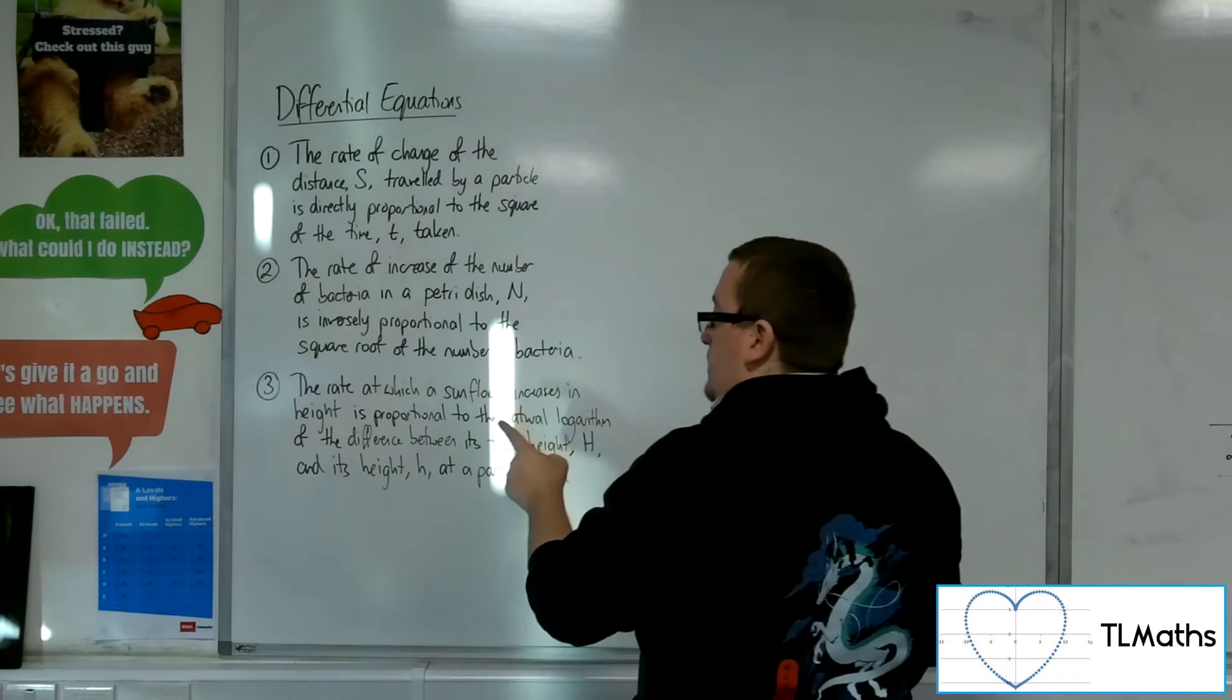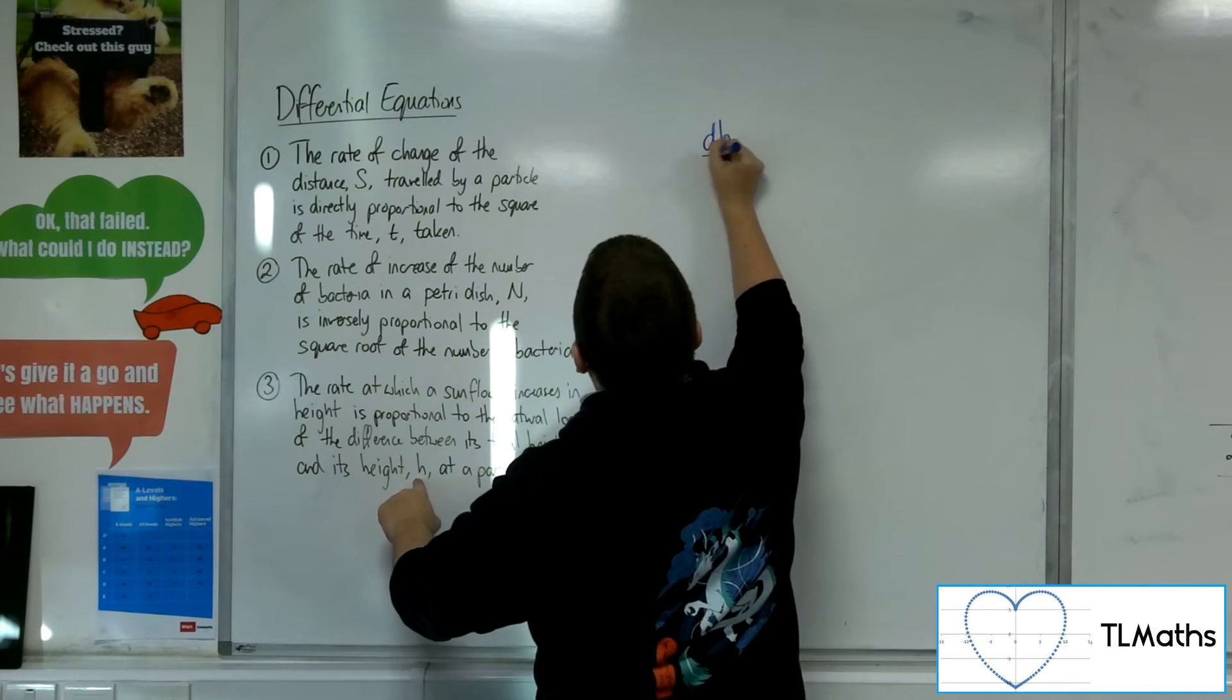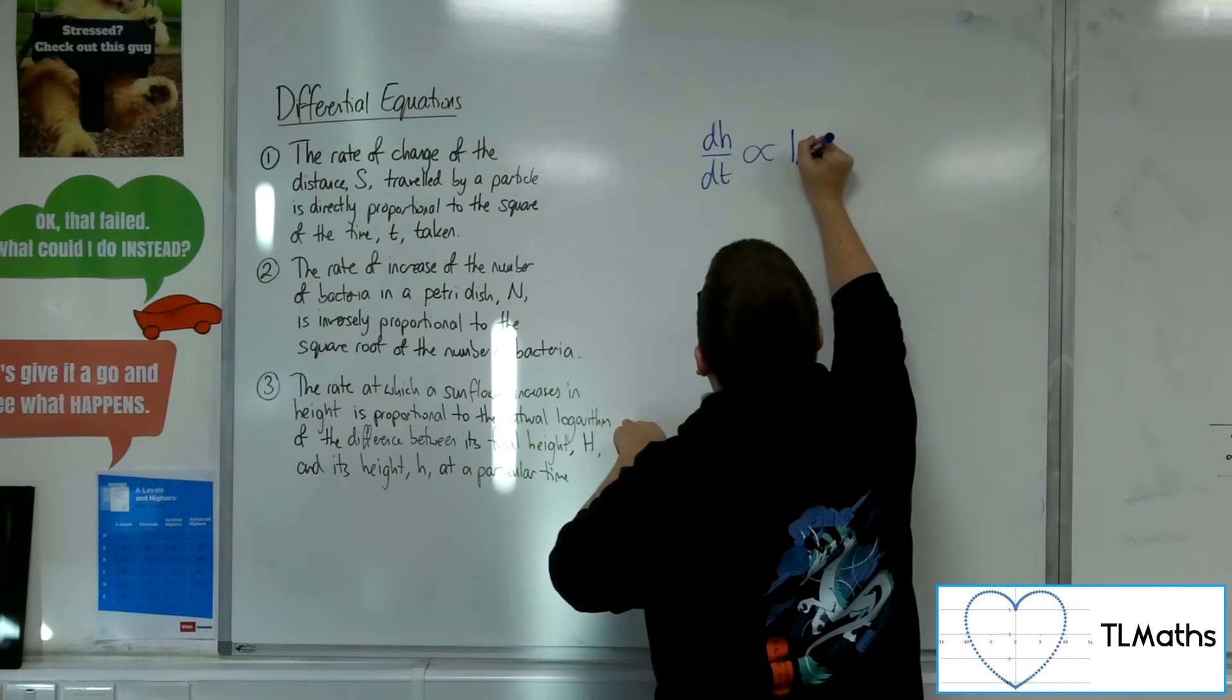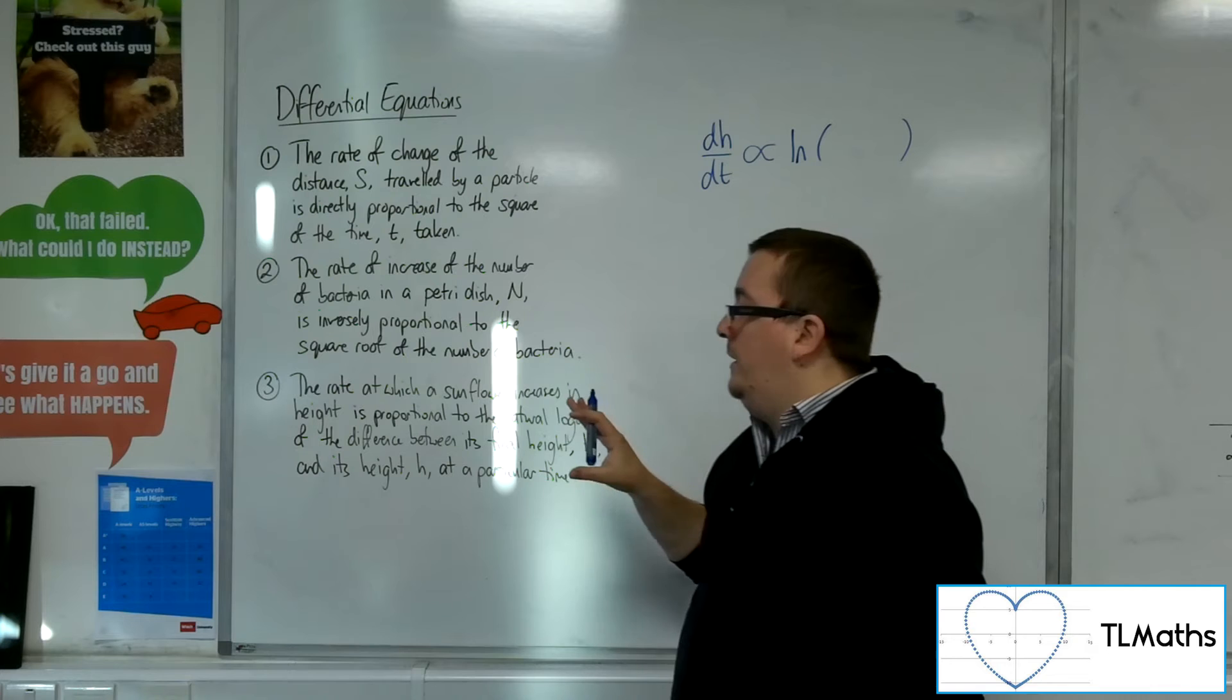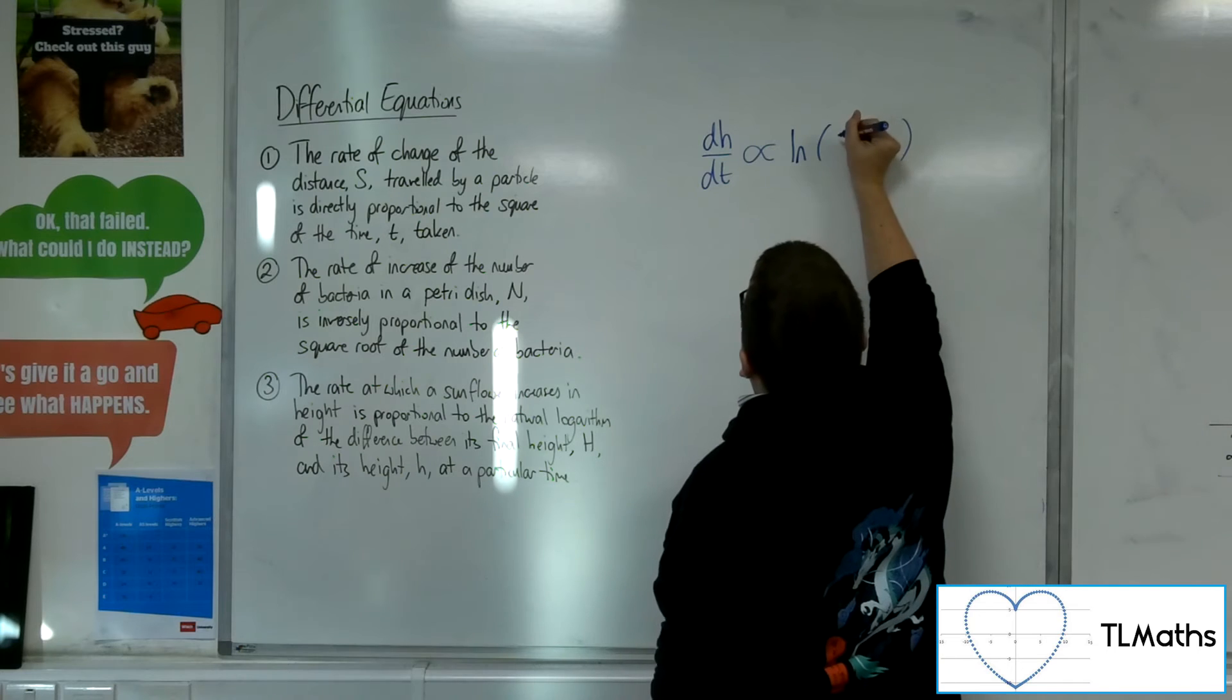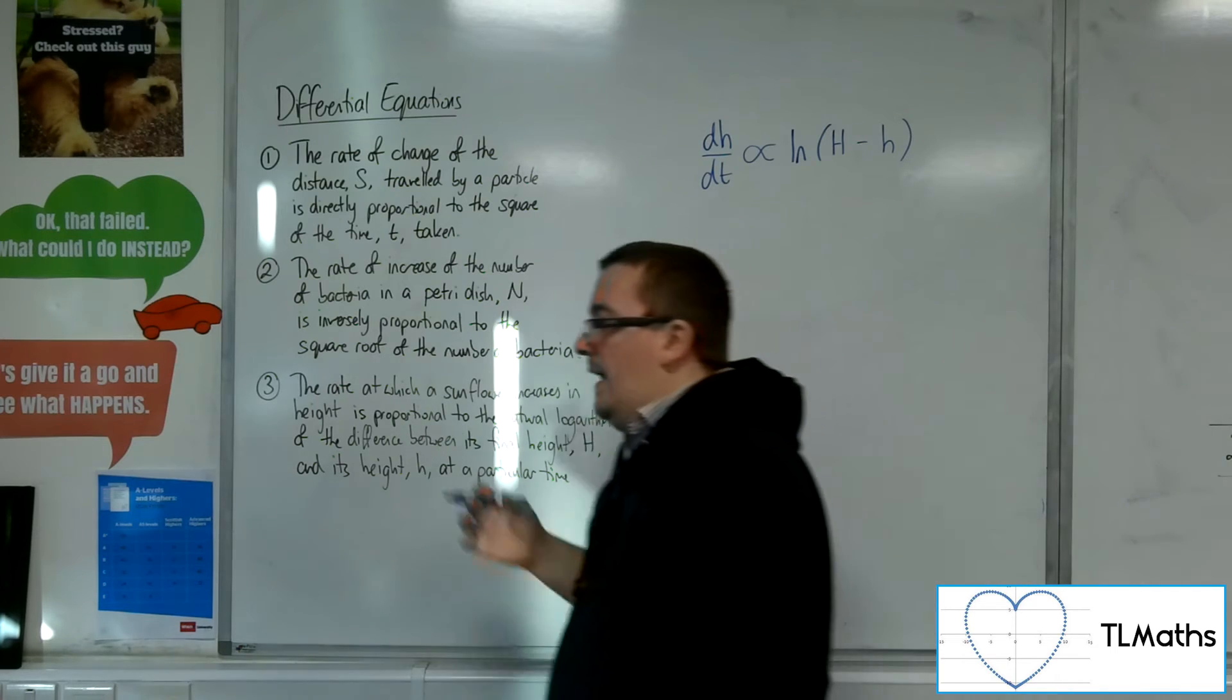So its height is h, so dh by dt. And we're saying that that is proportional to the natural logarithm of the difference between its final height and its height h. So it must be capital H minus lowercase h, and it's got to be that way round.